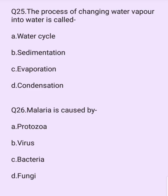The process of converting water vapor into water is called what? Options are: water cycle, sedimentation, evaporation, condensation. The answer is option D: condensation.